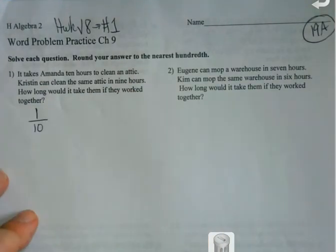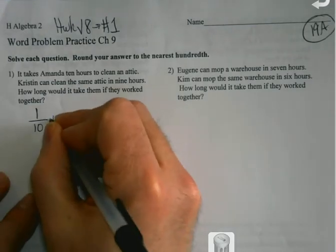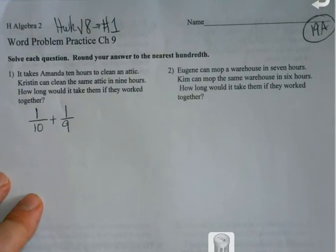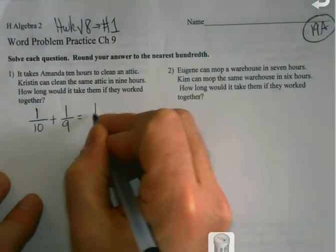So over any hour, she can complete one-tenth of the job. Kristen can clean the same attic in nine hours, so within an hour, she would complete one-ninth of the job. How long would it take if they worked together?